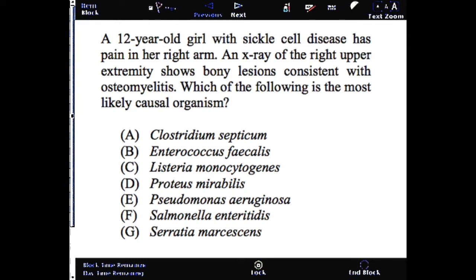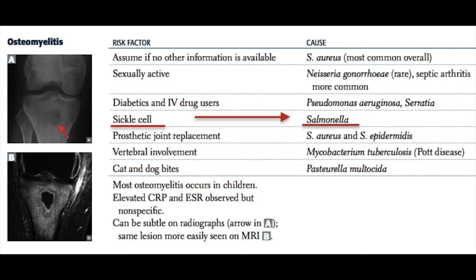The correct answer here is F, Salmonella enteritidis. This is a straightforward question. The patient has sickle cell disease and osteomyelitis. You should remember that Salmonella is the organism that causes osteomyelitis in sickle cell disease patients.